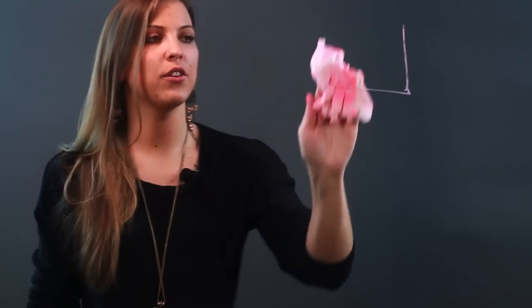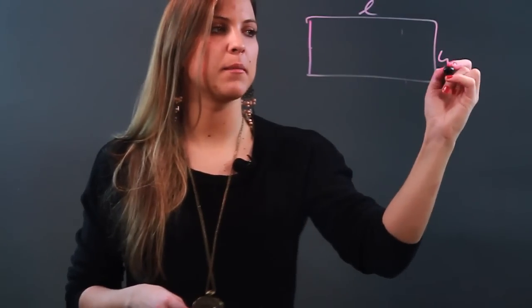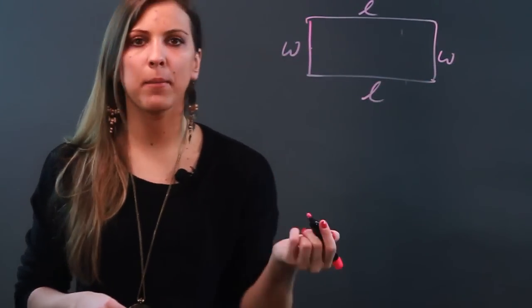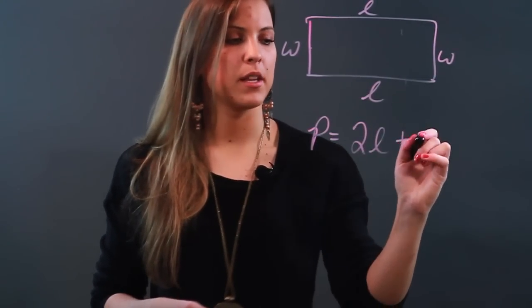So if you're given a rectangle and let's say again you're given that the perimeter is 20, we would label this L and this W, and this is also L and this is also W. So now my perimeter equation is P equals 2L plus 2W.